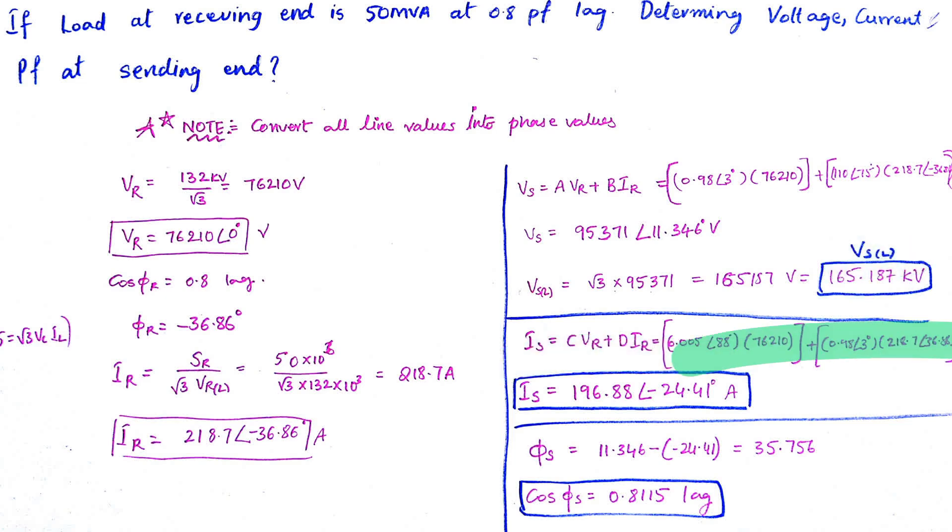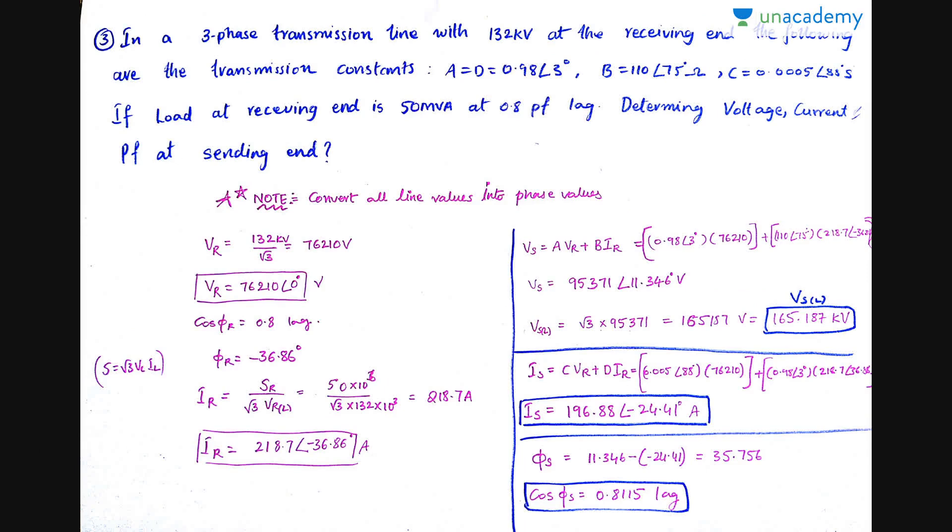Sending end current - similarly, you just put in all the values. You get Is as 196.88 at angle minus 24.41 amperes. I want to find the sending end power factor also. Power factor is - sending end power factor will be cos of φs, where φs is the angle between sending end voltage and sending end current. So sending end voltage angle minus current angle - the gap between both of the vectors of sending end voltage and sending end current is 35.756. Put cos and then you get 0.8115 lag as the answer. This is how we can solve a transmission line problem using ABCD parameters when given.